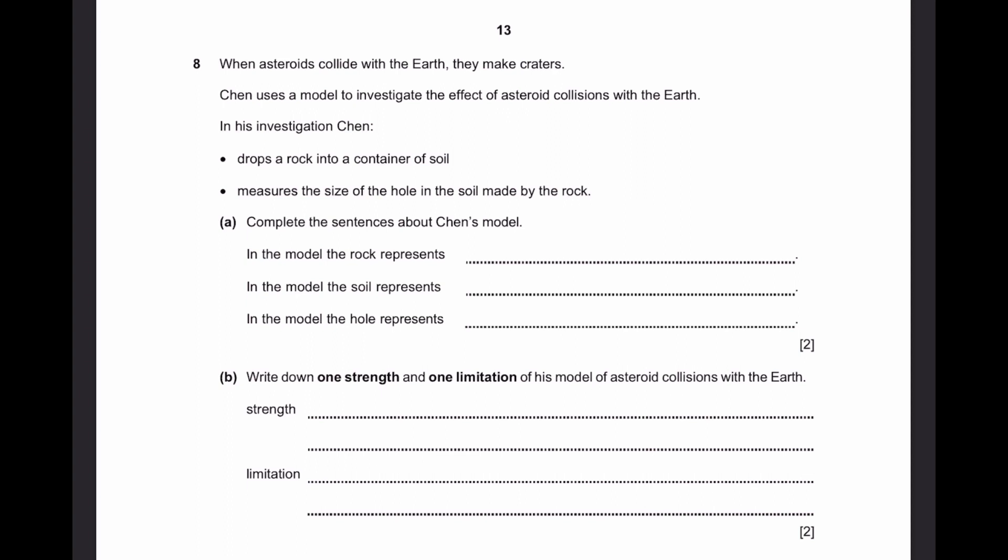In the model the rock represents dash. Of course the rock represents the asteroid. Asteroids are after all rocks. The soil of course represents the Earth. And the hole represents the crater.